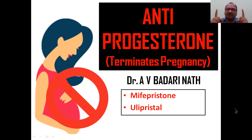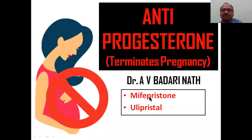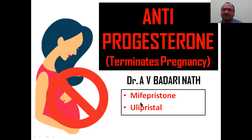Anti-progesterone terminates the pregnancy. There are two drugs to keep in mind. First one is mifepristone. If you reverse the letters it becomes 'wife-pristone' - when you don't want the pregnancy, your wife can take the mifepristone so that the pregnancy will be terminated.